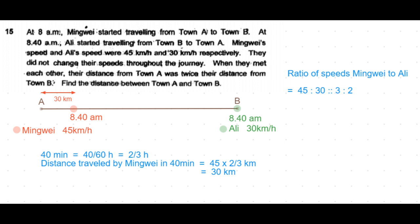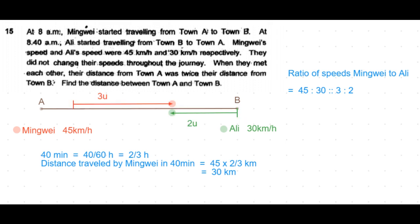Mingwei travels at 45 kilometers per hour, Ali travels at 30 kilometers per hour, so their ratio is 3 to 2. What it means is that given a fixed time, if Ali travels 2 units of distance, Mingwei would have traveled 3 units of distance. So from 8:40 until the point they meet each other, Mingwei would have traveled 3 units of distance and Ali would have traveled 2 units of distance.